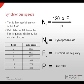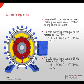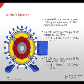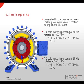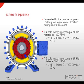For a two-pole motor, the synchronous speed would be 3,600 RPM. Two-times line frequency is generated by the number of poles pulling on a given rotor location during one full rotation. A four-pole motor operating at 60 hertz rotates at 1,800 RPM. To determine two-times line frequency, we take 1,800 times four poles and get 7,200 CPM or 120 hertz. A two-pole motor operating at 60 hertz rotates at 3,600 RPM. Two-times line frequency can be calculated by taking 3,600 RPM times two poles to get 7,200 CPM or 120 hertz.